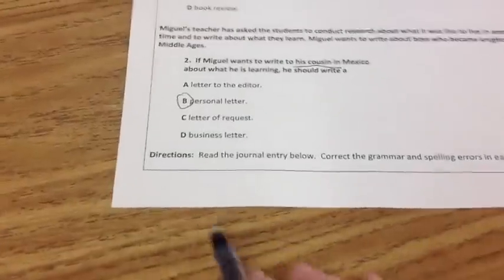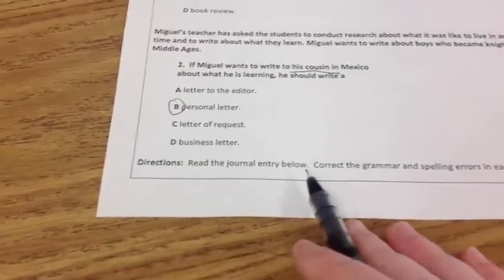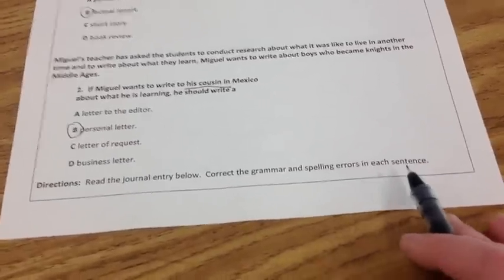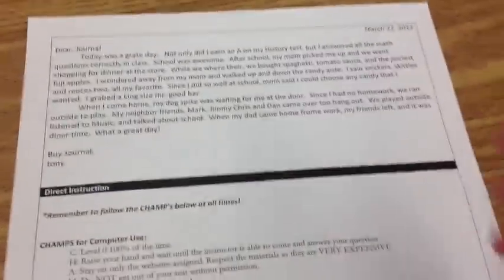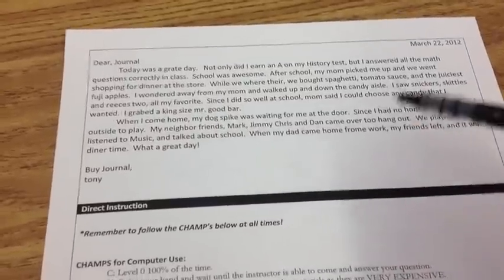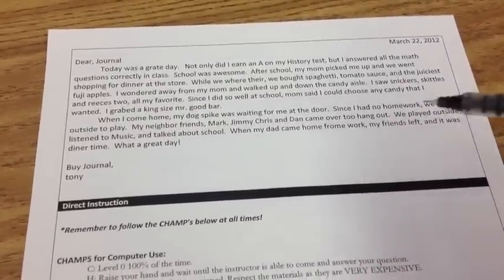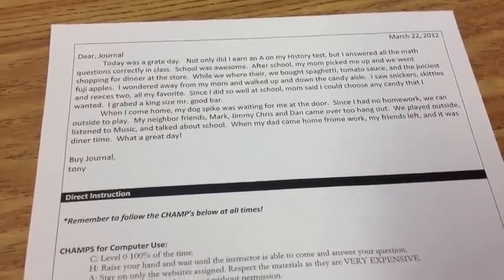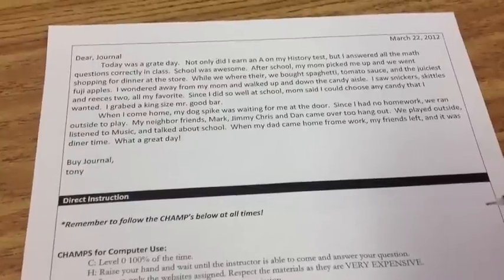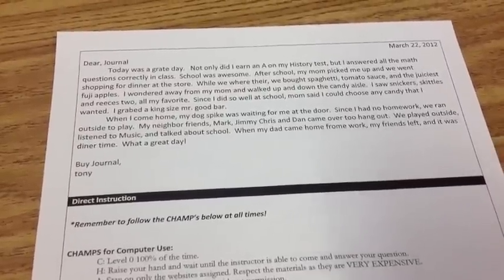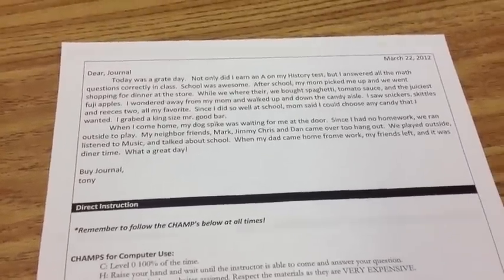Next, the directions say: read the journal entry below and correct the grammar and spelling errors in each sentence. I'm going to turn it over to the back — here's a journal entry. Please push pause and make sure you have at least five corrections, then unpause to find all the different corrections that could be made.